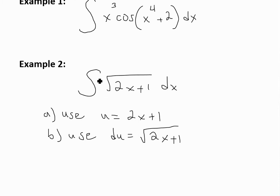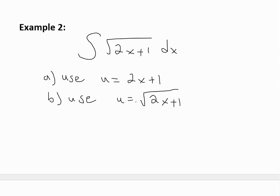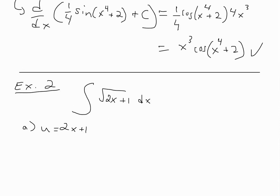Now let's go over example 2: find the integral of the square root of 2x plus 1. It has two parts — part A says use the substitution u equals 2x plus 1, and part B says use u equals the square root of 2x plus 1. You'll get the same answer, showing that many different substitutions can work.